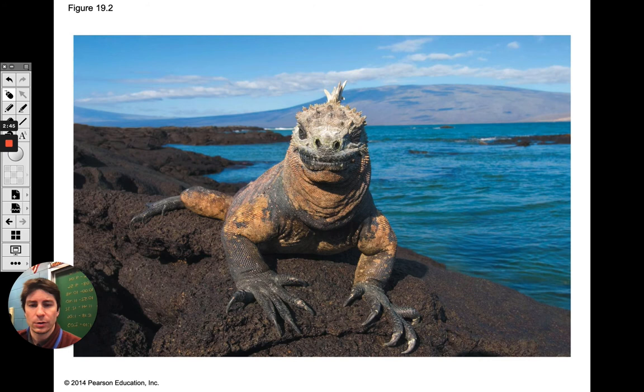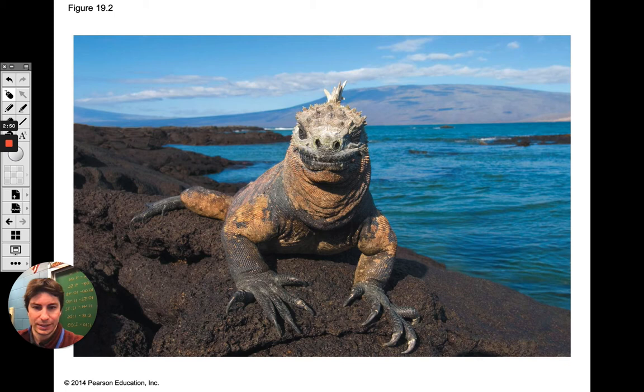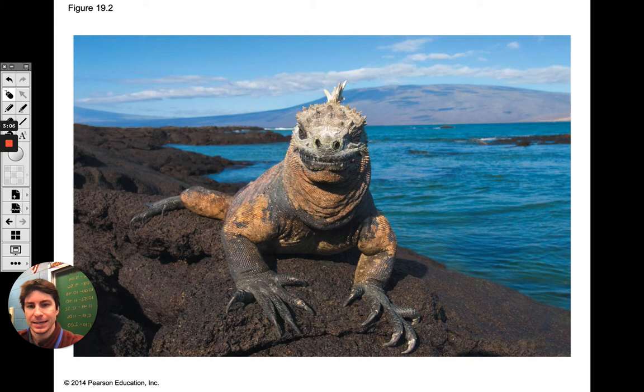We're going to talk about Darwin and also what happened before Darwin. Darwin was on the Galapagos Islands and studied so many different organisms — along with reptiles, he studied the birds, especially the finches. But he also studied all the orchids on the island and different plants. So it wasn't just animals — it was actually plants as well.